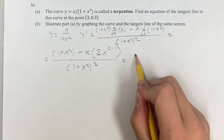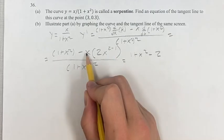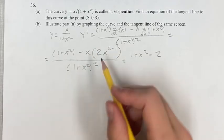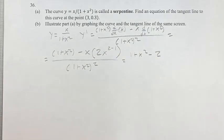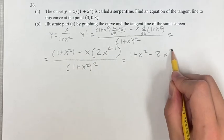Simplifying this, we get 1 plus x squared minus 2x times x. x to the 2 minus 1 is x to the first power, which is x, so this is x times x, so x squared.